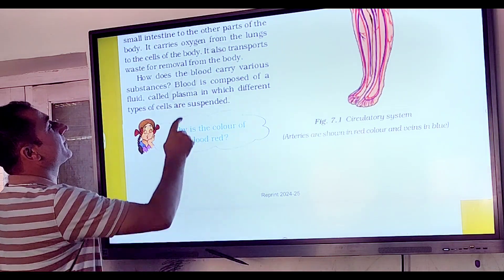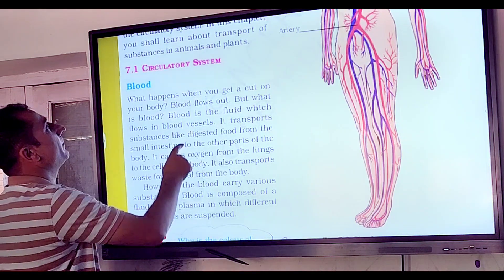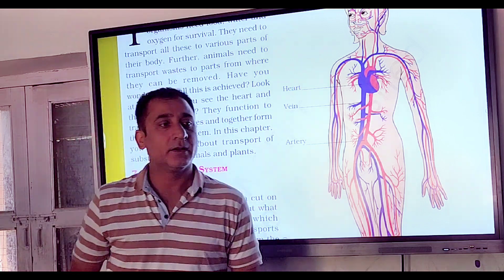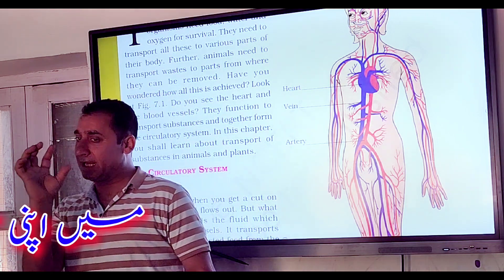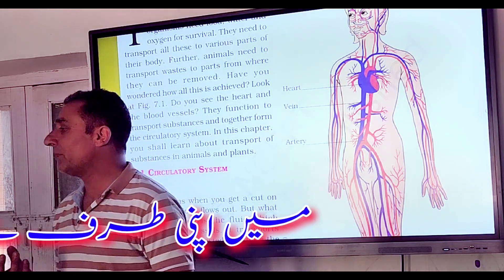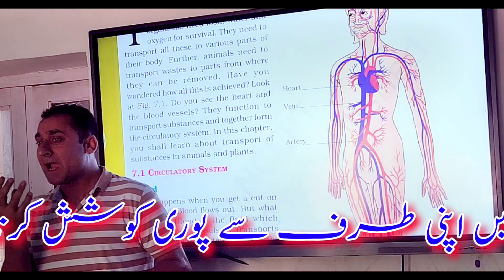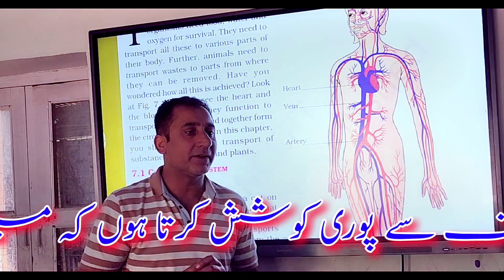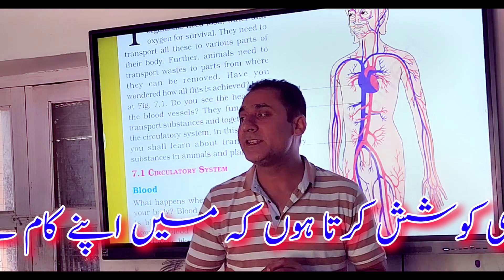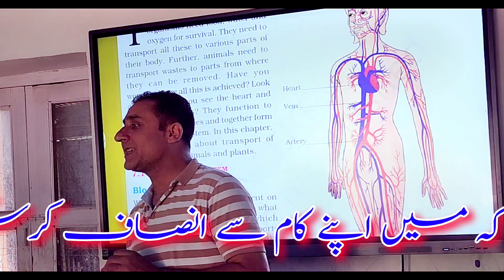We are talking about single-celled organisms, which we call unicellular. Unicellular means one cell. So there are a few microscopic organisms that are unicellular.